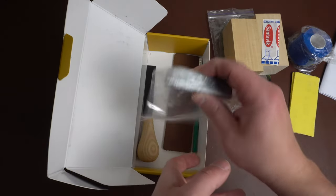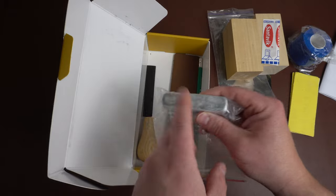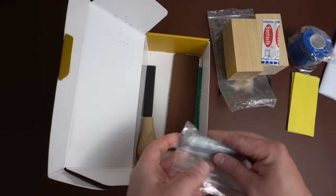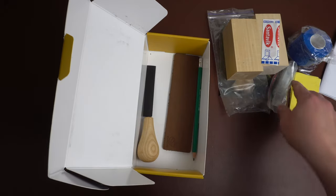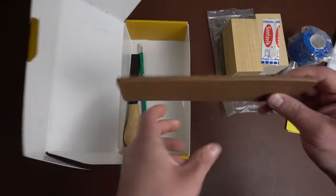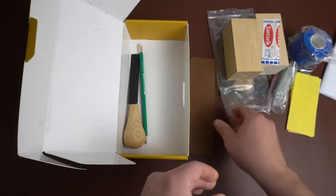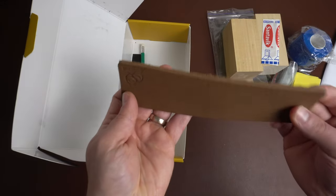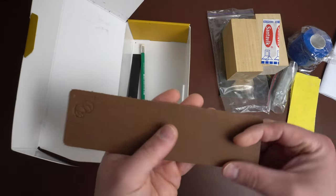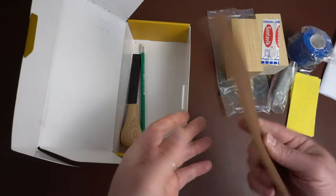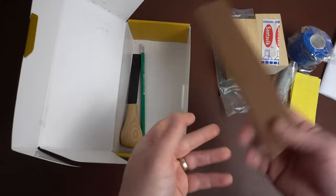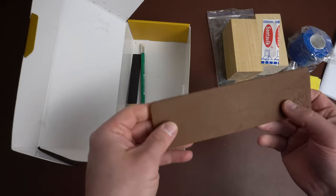There's a stropping compound. I'm not sure what type of grit it is, but it's probably comparable to flex cut's gold or something like that. This is kind of cool. It's a little thin piece of leather, it's a strop. You just throw it down on any flat surface and you'll be able to strop your knife. I like this because it's small, it's thin, it's light. You can just throw it in your backpack or keep it in your car. Pretty cool.